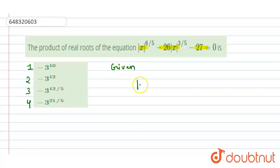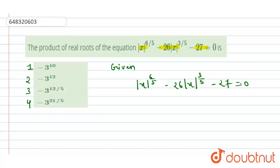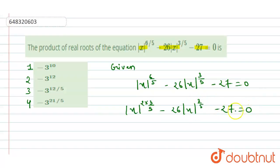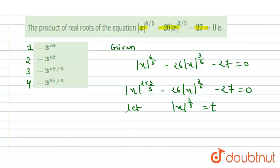What is given to us is |x|^(6/5) - 26|x|^(3/5) - 27 = 0. We can rewrite this as |x|^(2 × 3/5) - 26|x|^(3/5) - 27 = 0. Now we substitute: let |x|^(3/5) = t, so we get t² - 26t - 27 = 0.